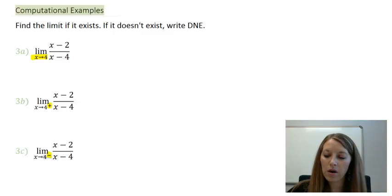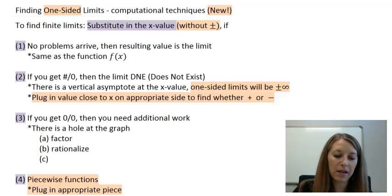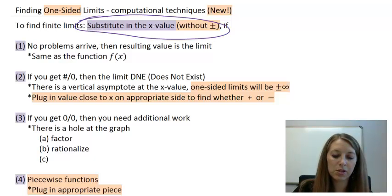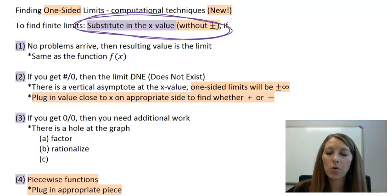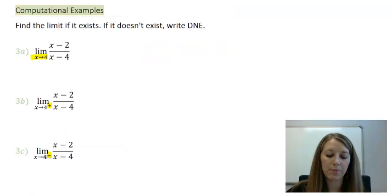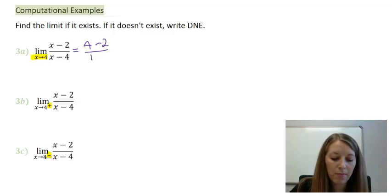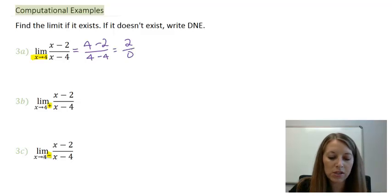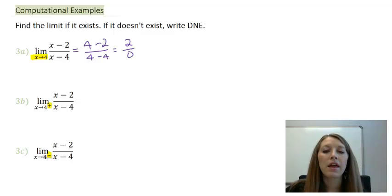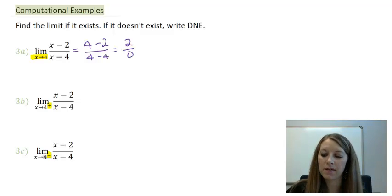Reviewing our computational techniques, the first step in any situation is to substitute in the x value, ignoring the right-hand and left-hand side. Let's substitute in 4. On the top we get 4 minus 2, and on the bottom we get 4 minus 4. So 4 minus 2 gives us 2, and we have 2 over 0. If we were looking for the function value, it would be undefined, but let's see what happens when we're looking for the limit.